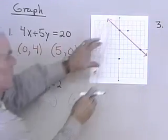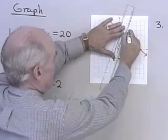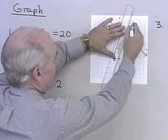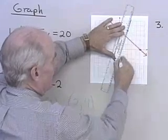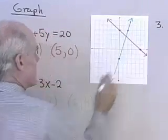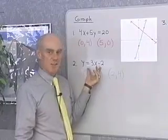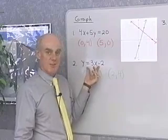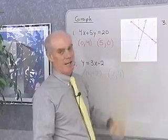What I'm going to do is connect these two points with a straight line. And when I do that, I'm going to have the graph of y equals 3x minus 2. And again, every point on this line has coordinates that satisfy this equation. And every ordered pair that satisfies this equation has a graph that lies on this line.